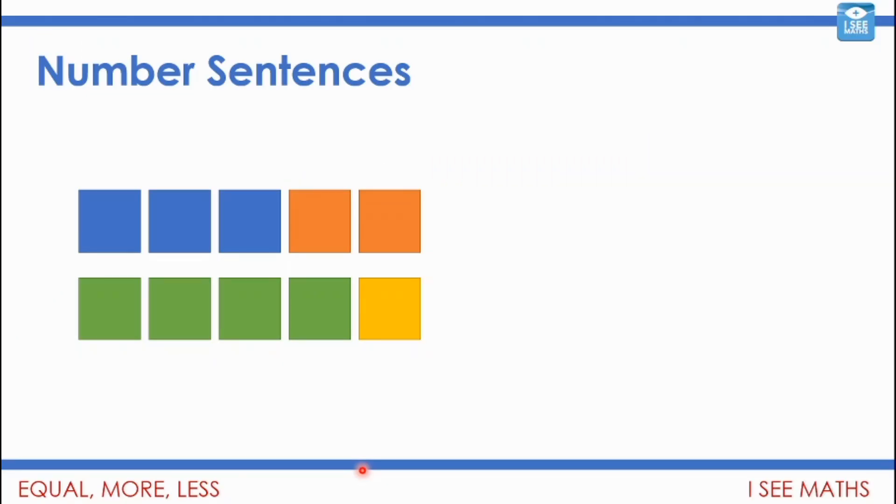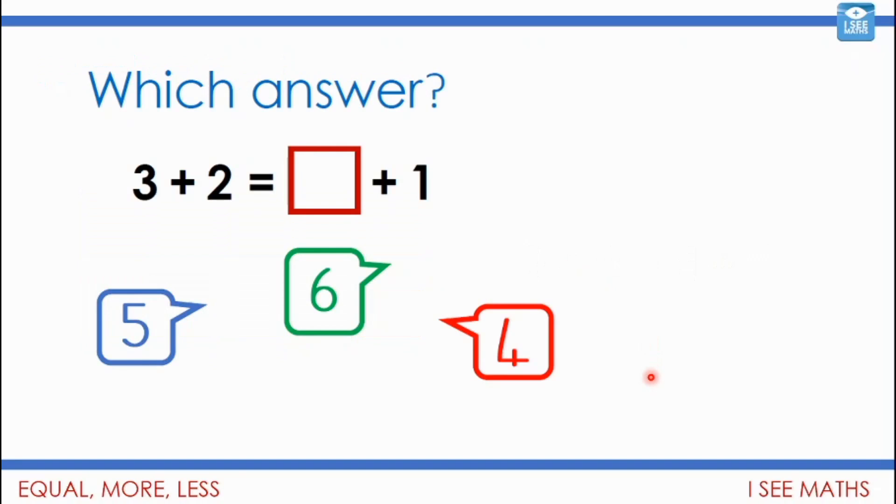So let's first of all have a look at how number sentences are built. Let's say for example here, a way that we could describe this image is that 3 plus 2, so the 3 that are blue and the 2 that are orange, is the same as 4 plus 1. And this equal sign means the same. That's the same amount. We've got 5 here and 5 there, and again 5 here and 5 here. It's the same amount either side of the equal sign.